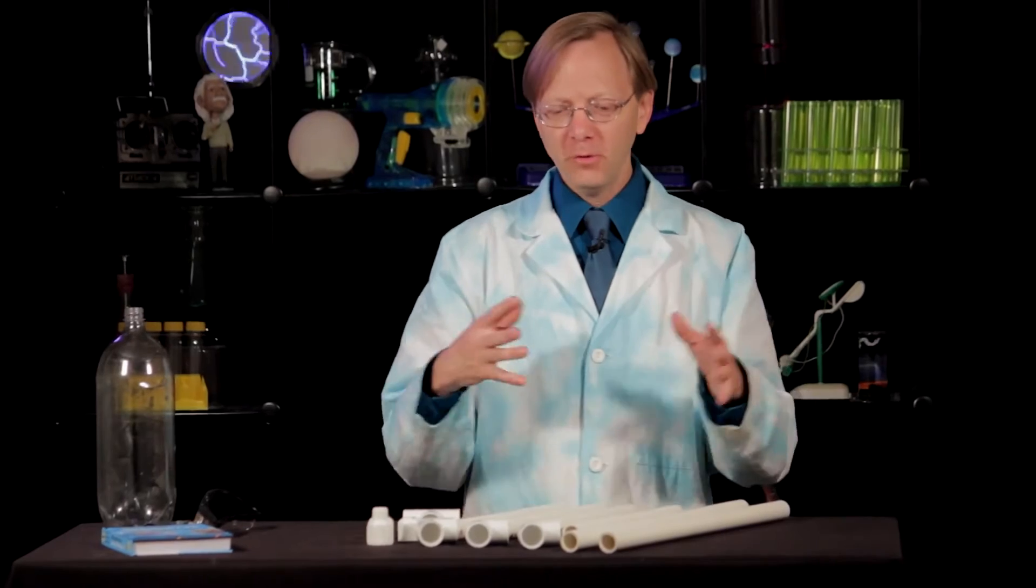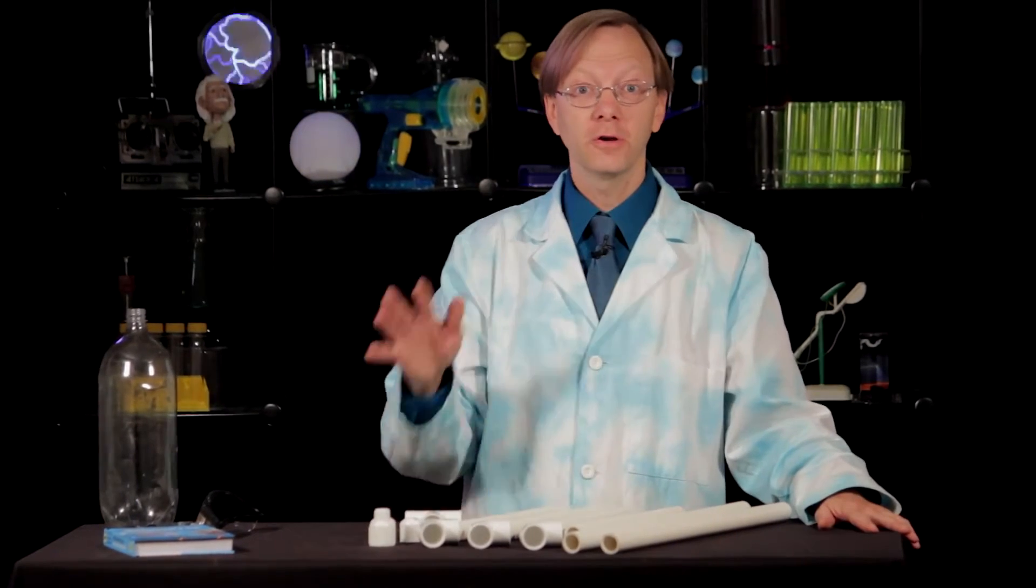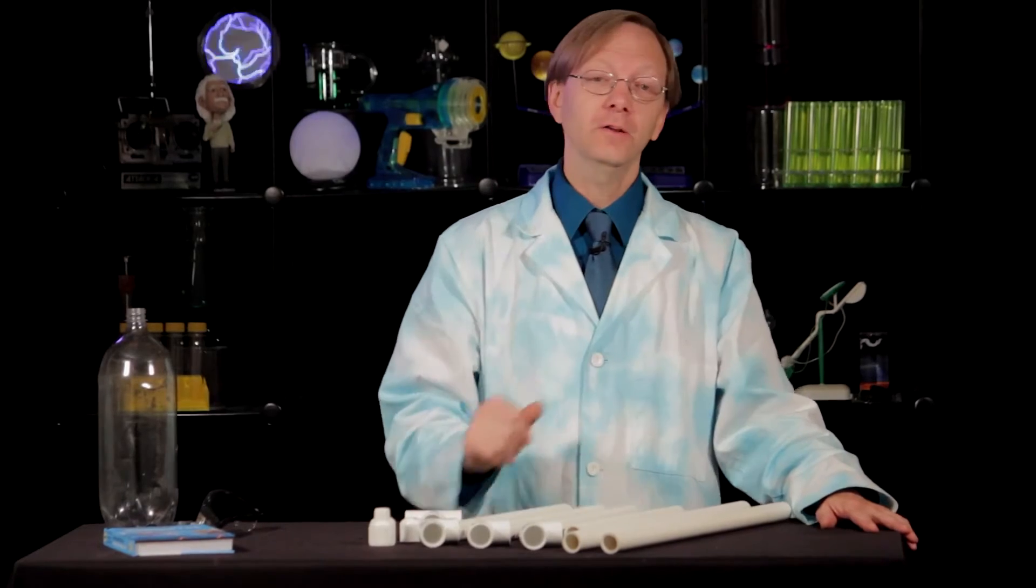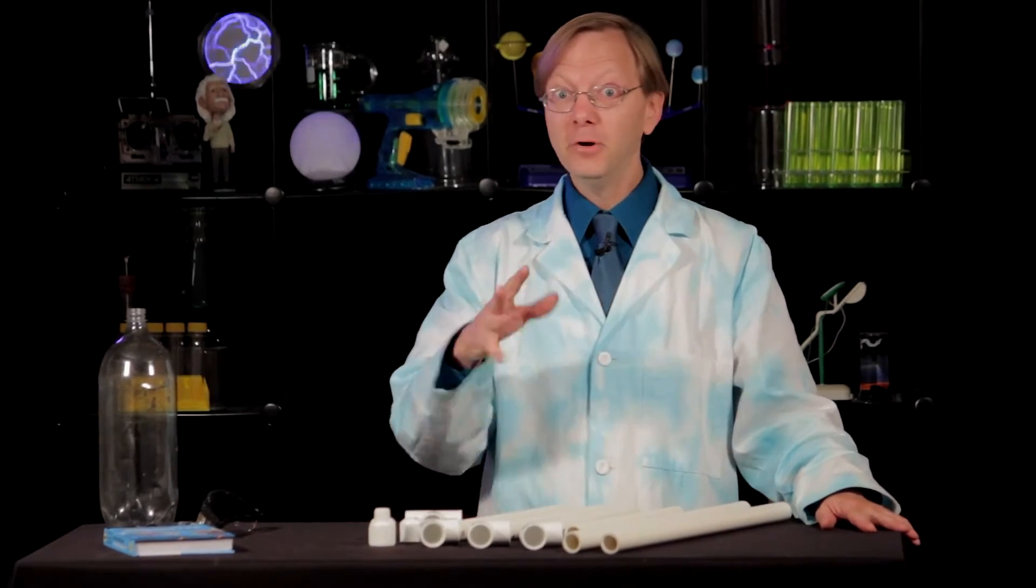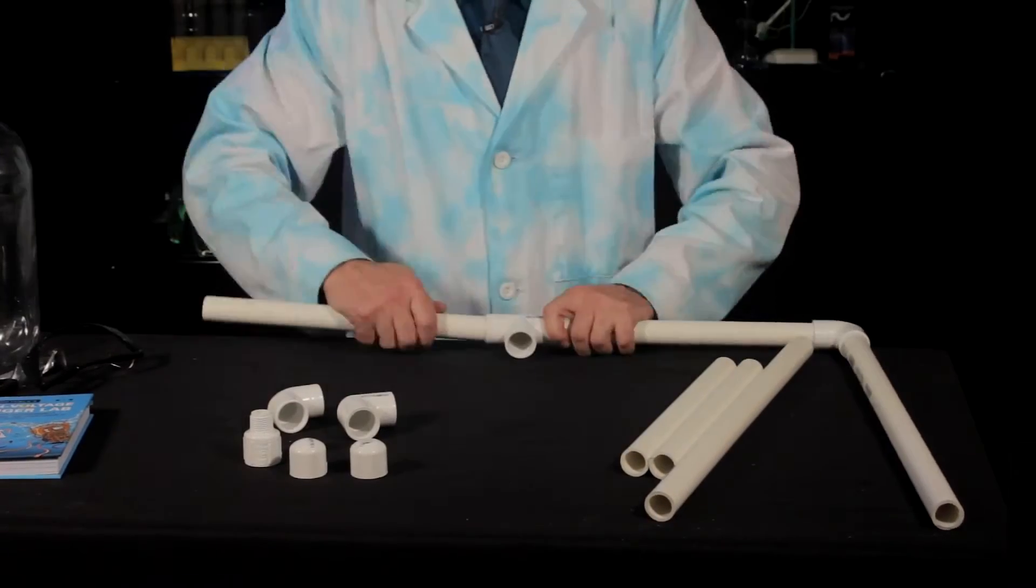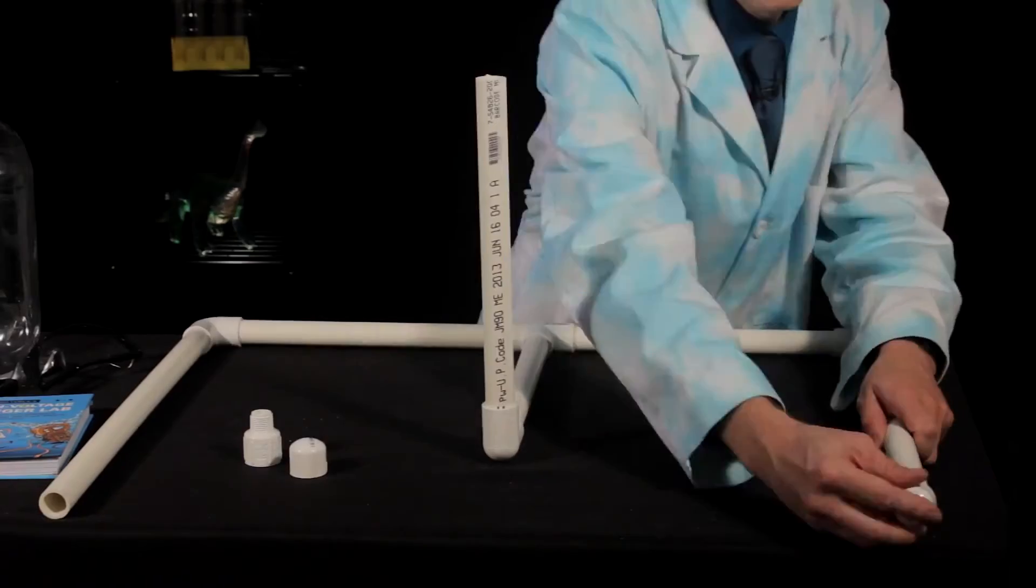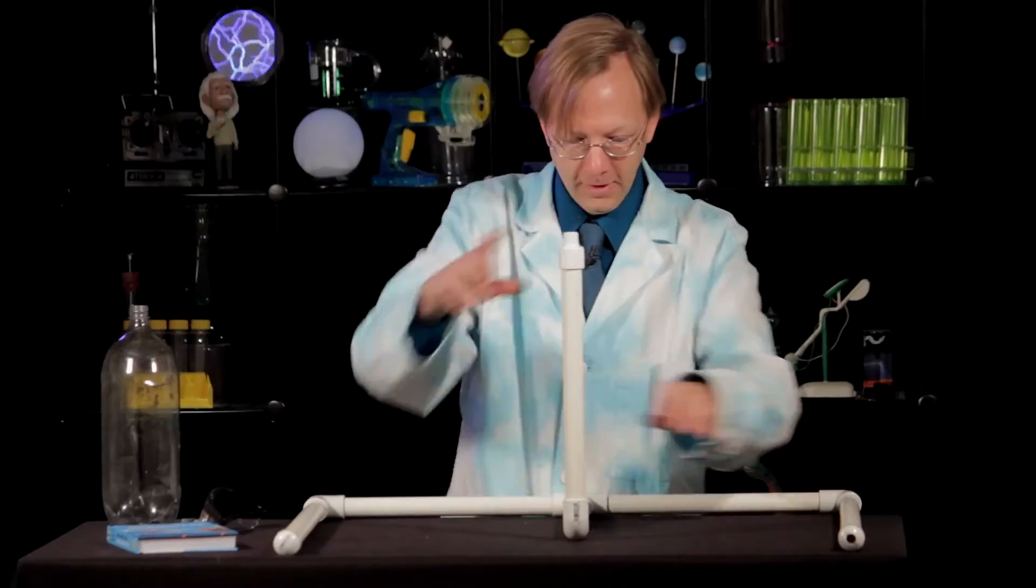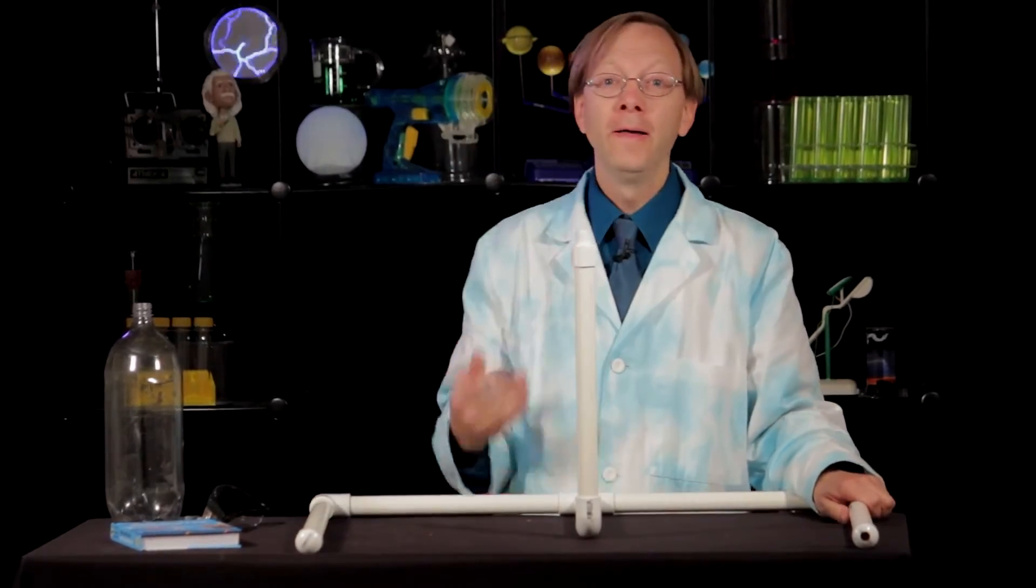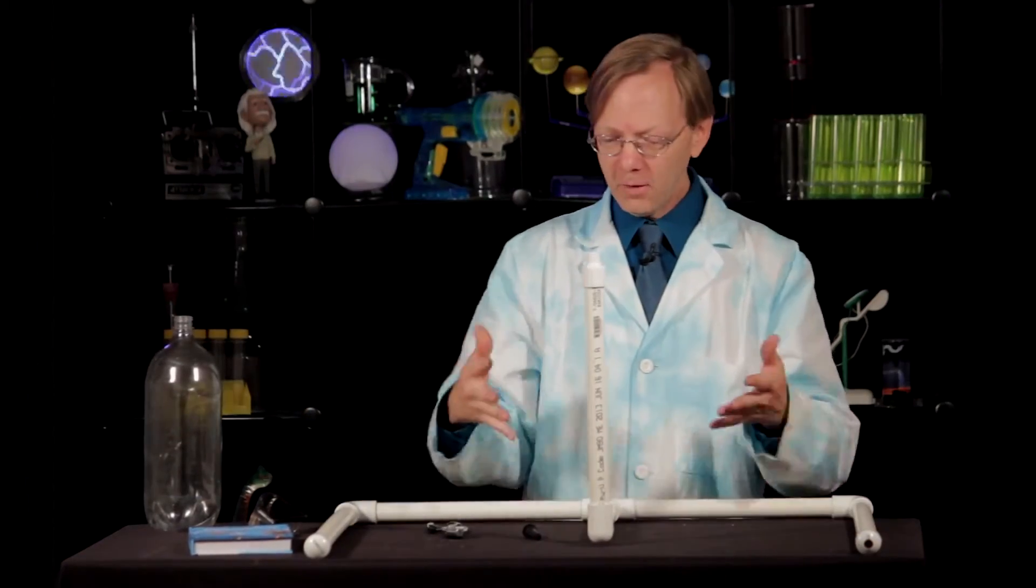Probably the first thing to do is to sort of get your pieces together and test fit them and make sure that you know how it's all going to go together. So take a look at the illustration in the book and put it all together yourself. It'll look something like this. All right, well now we've sort of got it loosely set up.